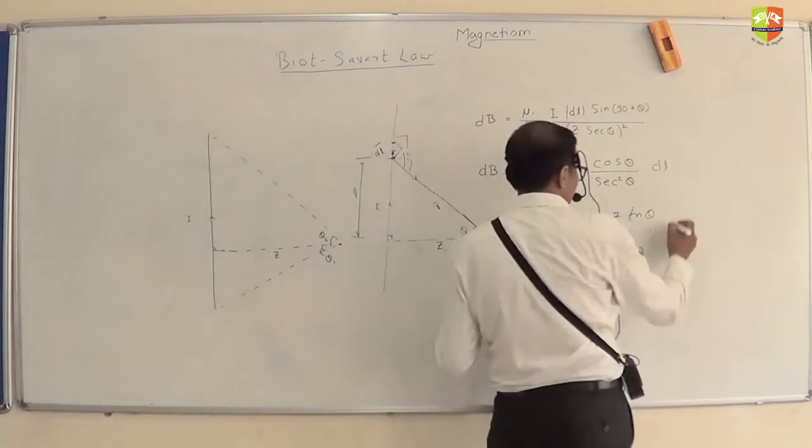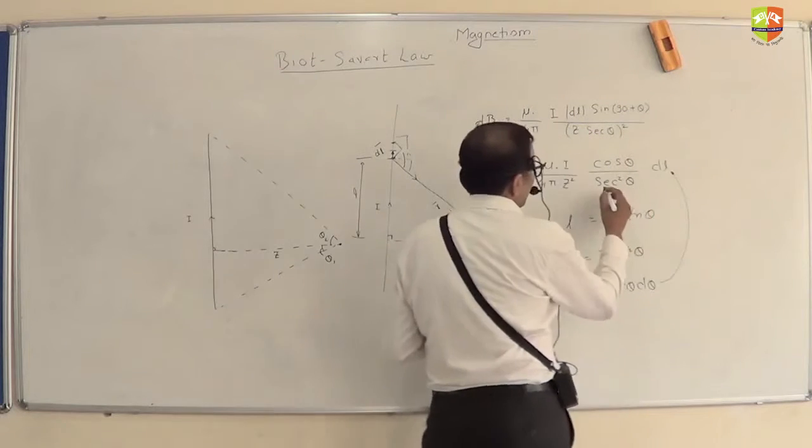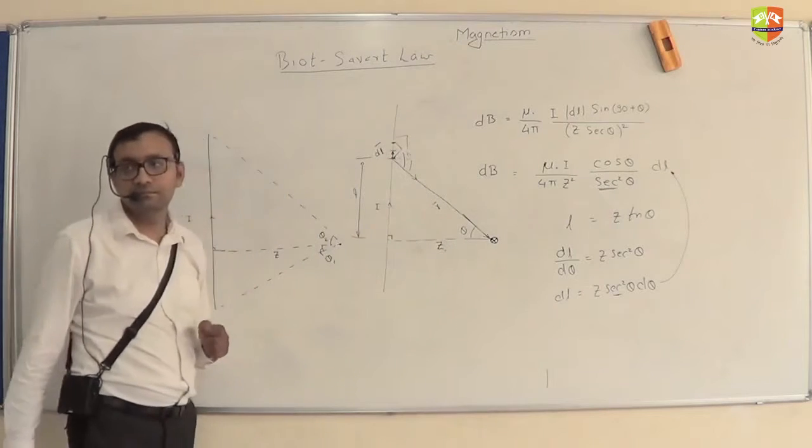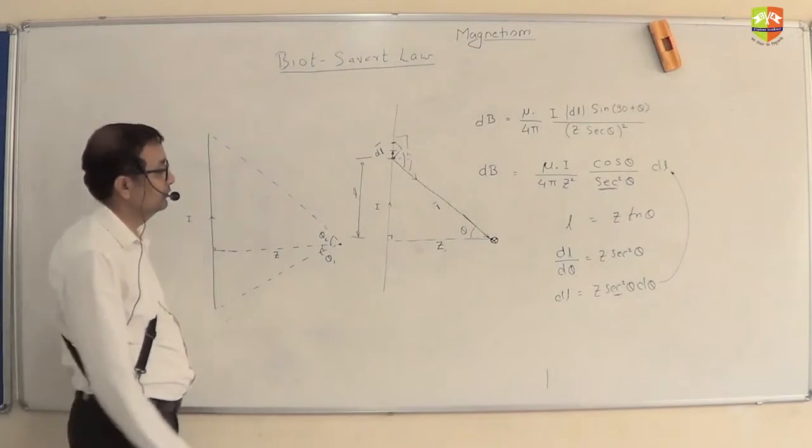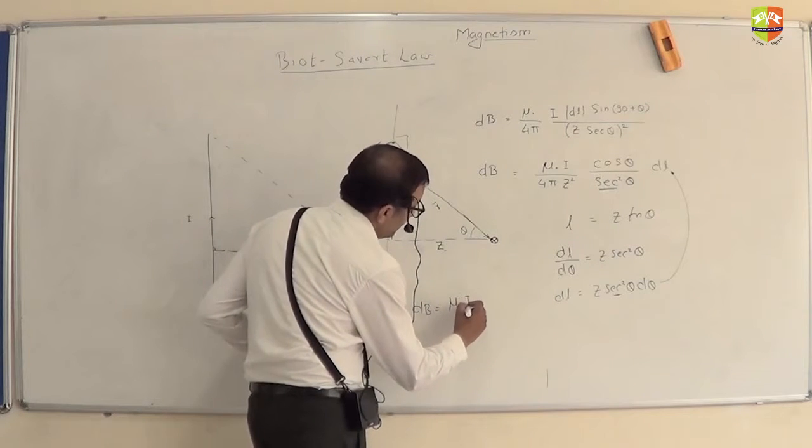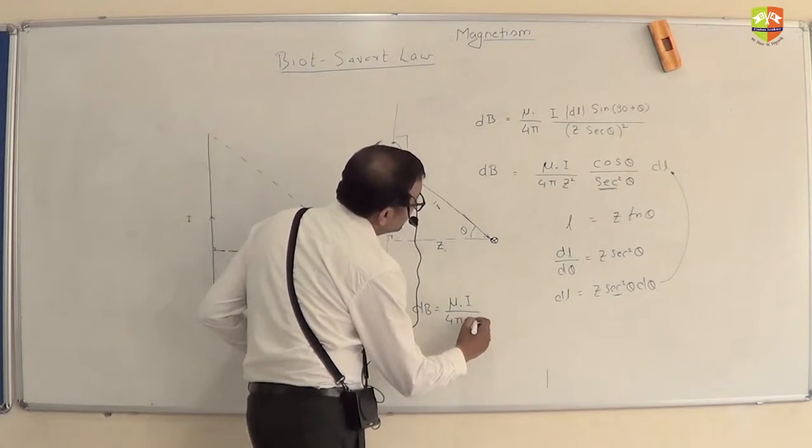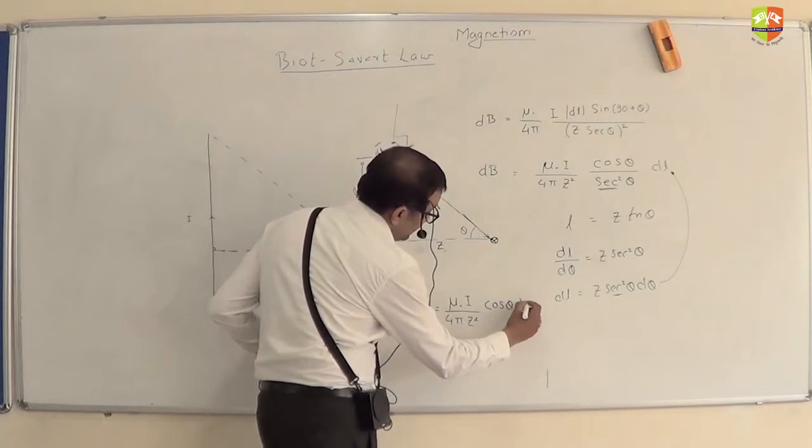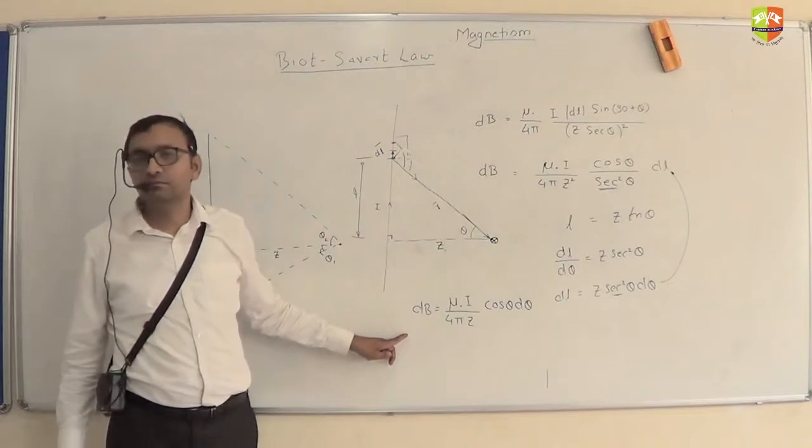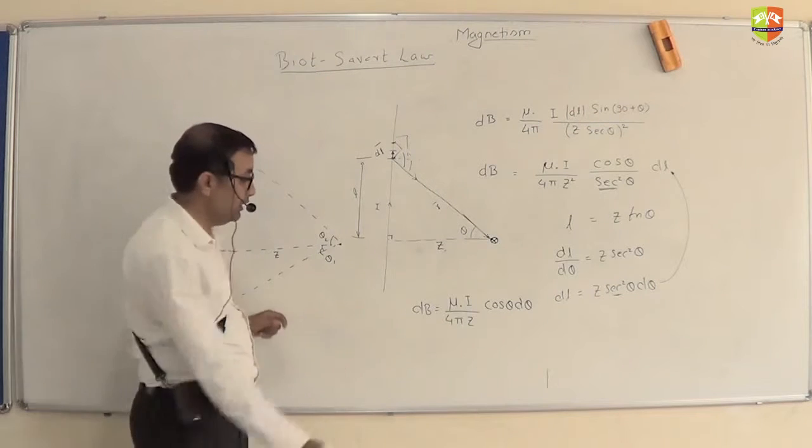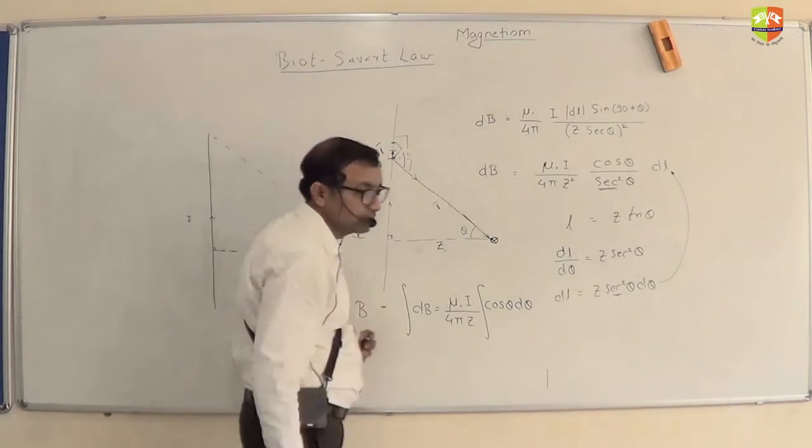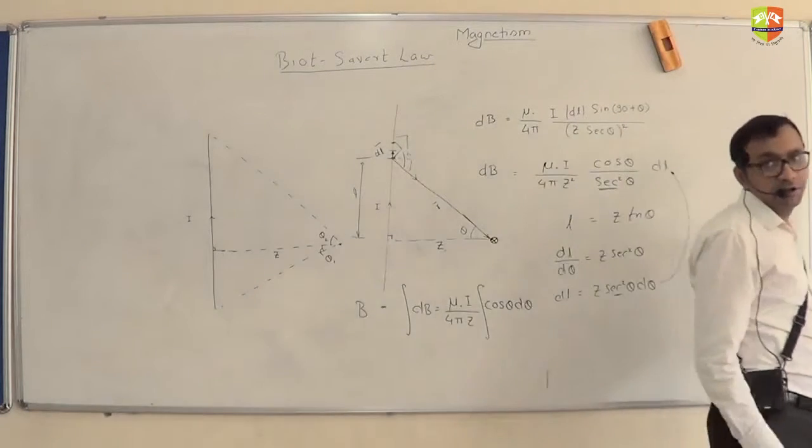Now you substitute this dL over here. You can see that it nicely cancels. So you have dB equals mu0 I divided by 4πZ² cos θ dθ. All of you got this? This you have to integrate. Limits from θ will be what? Theta1 to theta2?